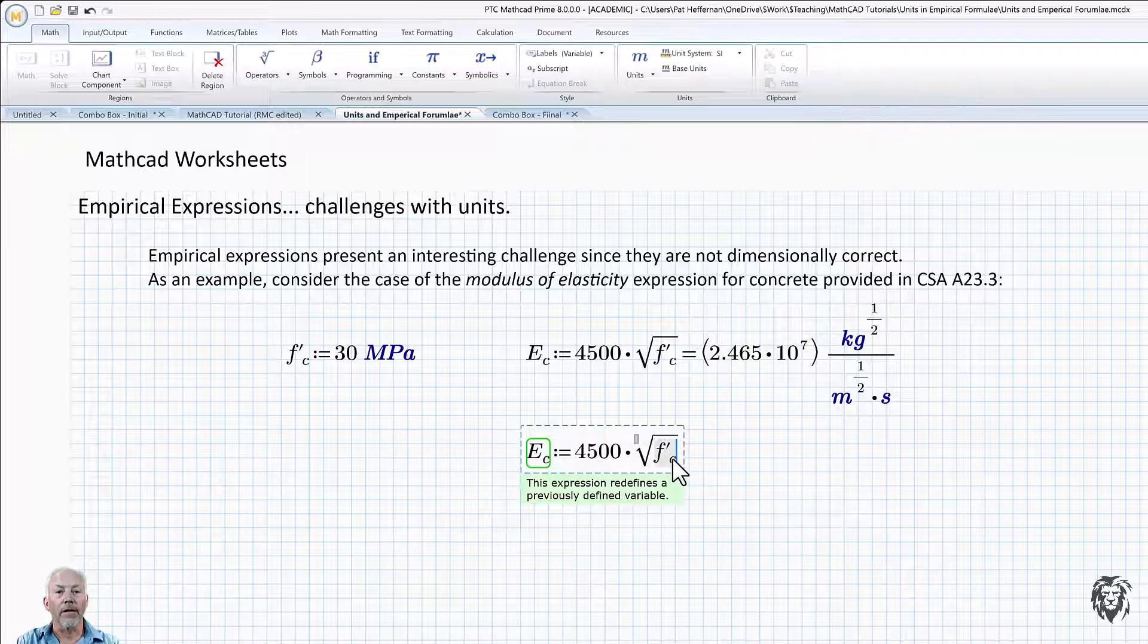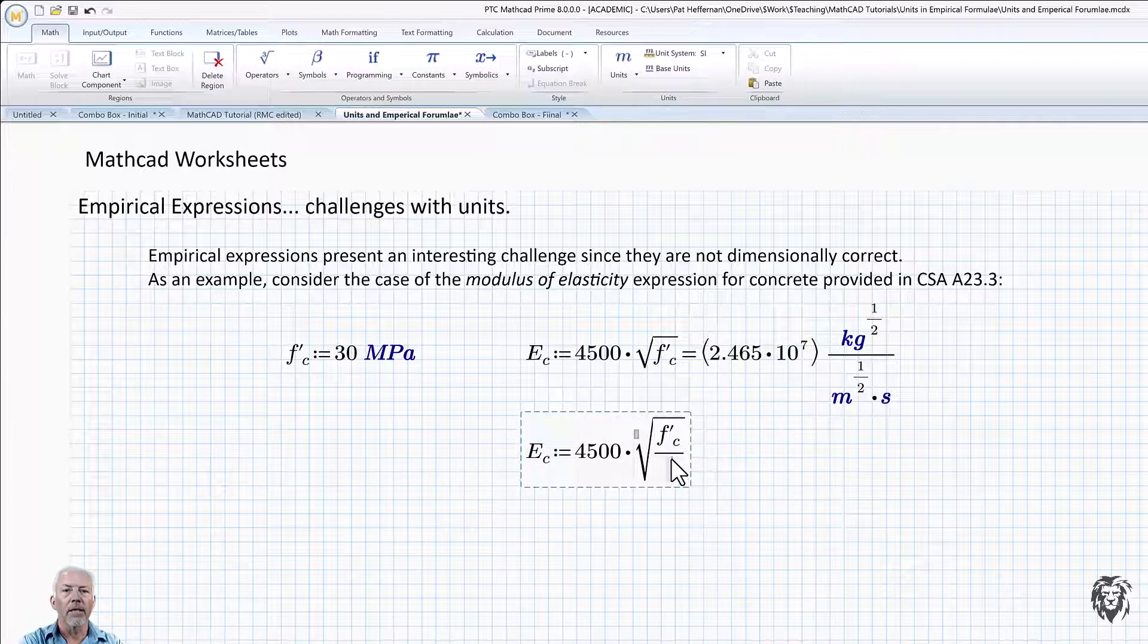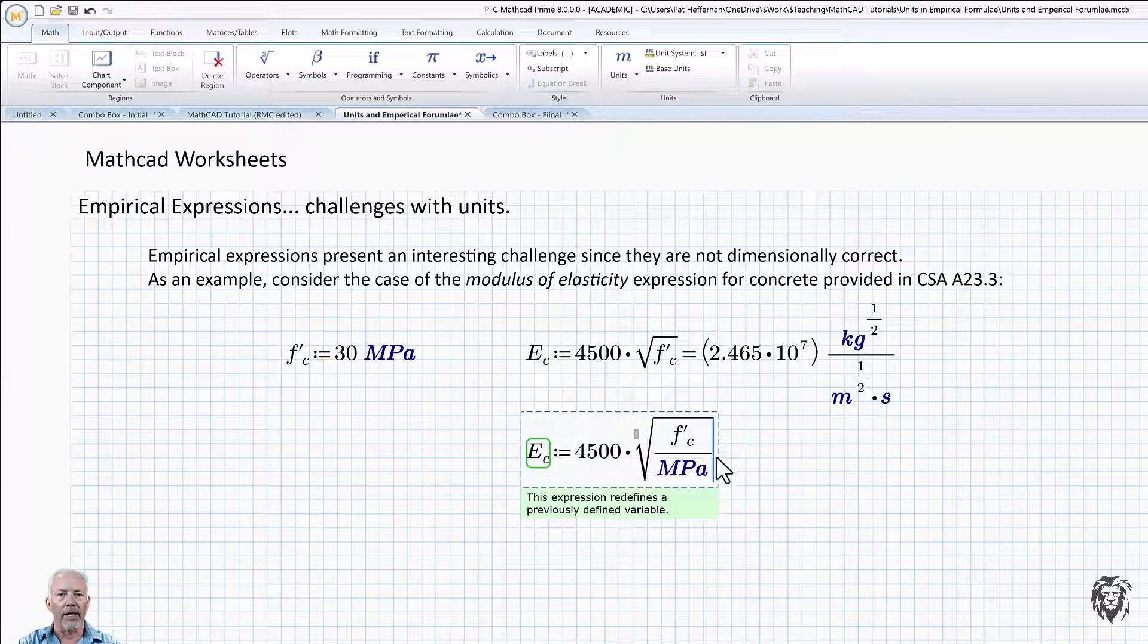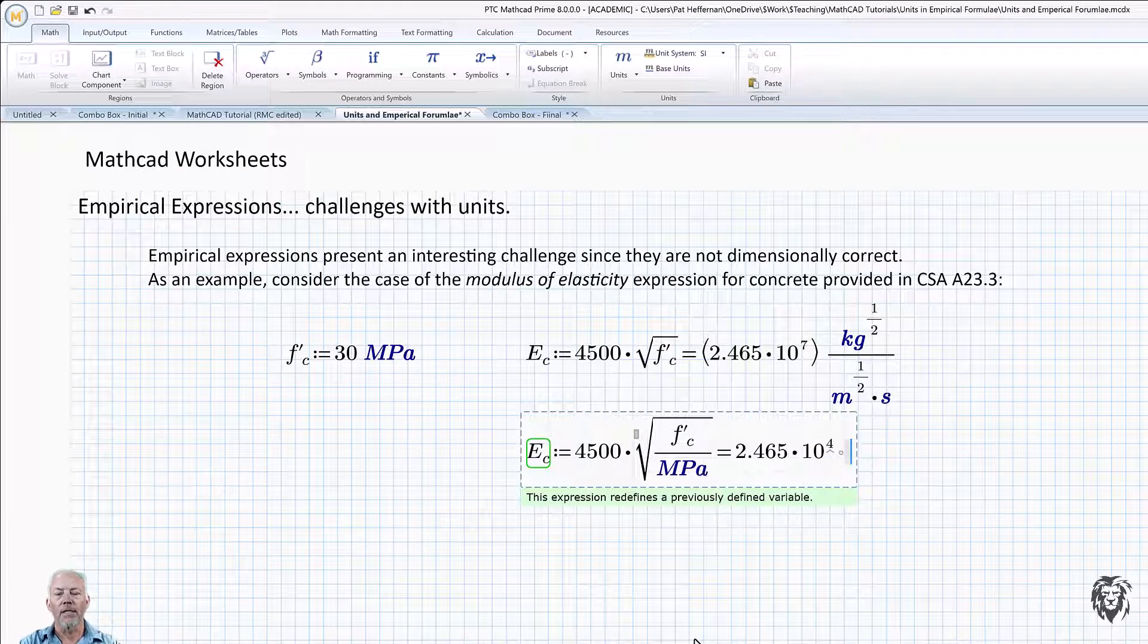So the first thing I'm going to do is I'm going to strip the units out of the parameter that are coming in. And so I do that by dividing through by megapascals. And if I were to hit equals now, we'd have a unitless value coming out. And so we're partway there.